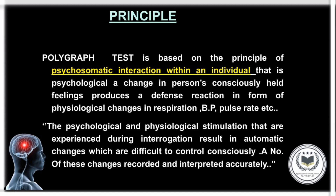What is the principle behind the polygraph test? The polygraph test is based on the principle of psychosomatic interaction with an individual. Psychologically, a change in a person's consciously held feelings produces a defense reaction in the form of physiological changes in blood pressure, respiration, pulse rate, galvanic skin resistance, etc. According to Reid, a fear of detection and entrapment induces a person to lie, which produces such responses.